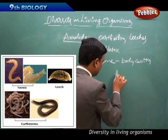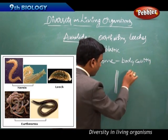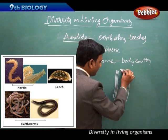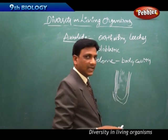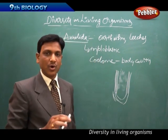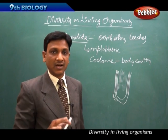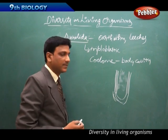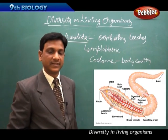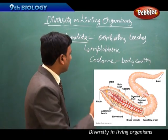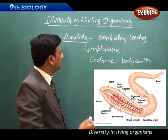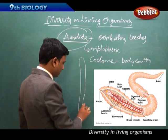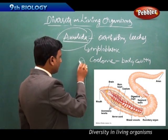The body cavity, or coelom, is a space inside the body wall where true organs can form and be protected. Annelida have a true coelom, and true organs are found in these animals. Their bodies also show segmentation.